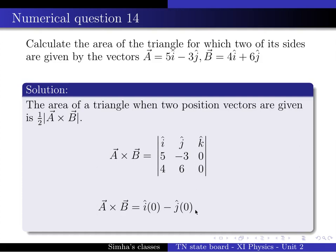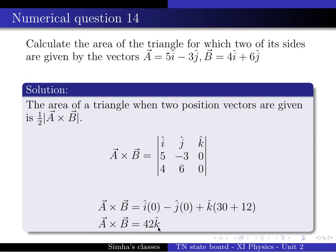The third term is plus k multiplied by its minor. So we calculate: 5 multiplied by 6 equals 30, minus (minus 3 multiplied by 4) equals plus 12. So k times (30 plus 12) equals 42k.